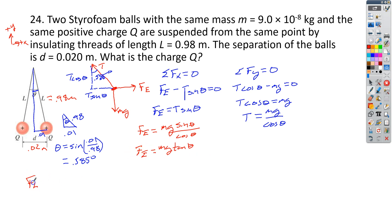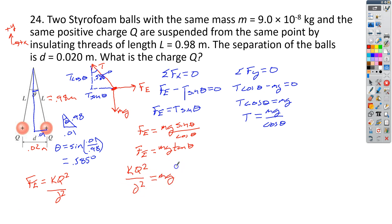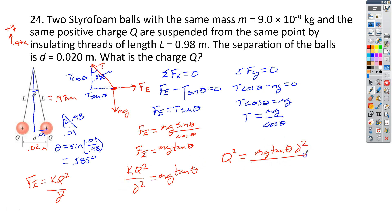But the electric force Fe also equals k times Q squared over D squared, since both charges are the same Q and the separation is D. Setting these equal: k times Q squared over D squared equals mg times tangent of the angle. Solving for Q squared: Q squared equals mg times tangent of the angle times D squared all over k. Then Q is the square root of that whole expression.